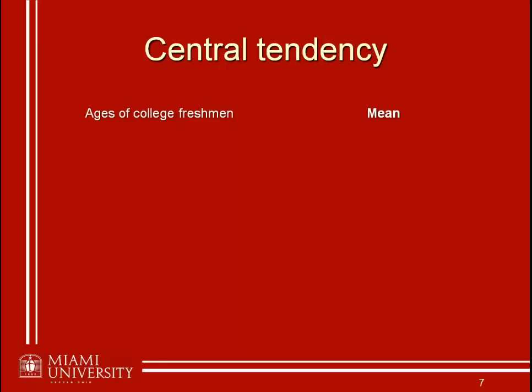Now let's think of a different situation. What if you were looking at school rankings — say, a number of different magazines ranking Miami University and you wanted to know where you stand across all of those rankings? You should recall from the previous slide: this is exactly the situation where you're probably going to want to use the median. For ranking or ordinal-type data, the median is usually what's going to make the most sense.